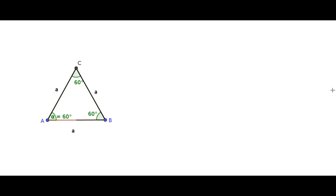We have seen in textbooks that trigonometric ratios for standard angles are fixed. Now, how does this work? We are curious about how this is true for any right angle triangle.